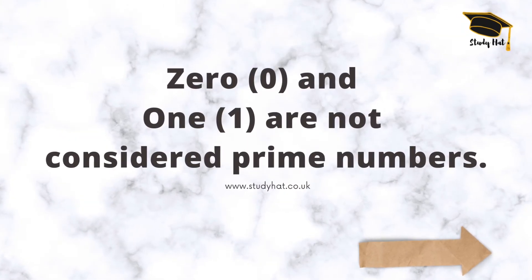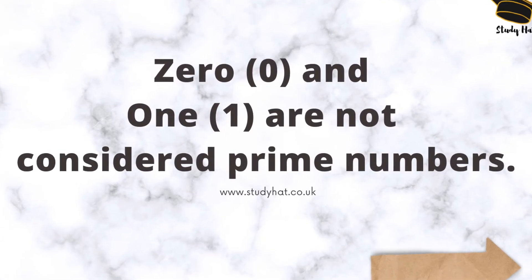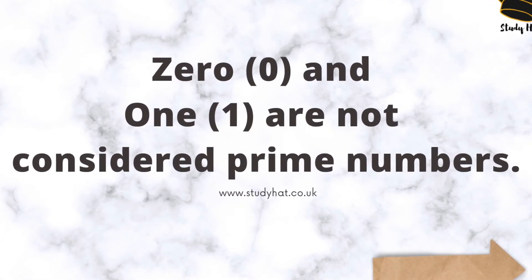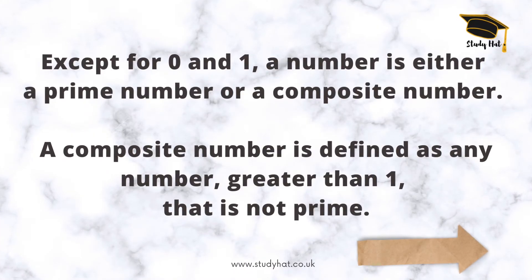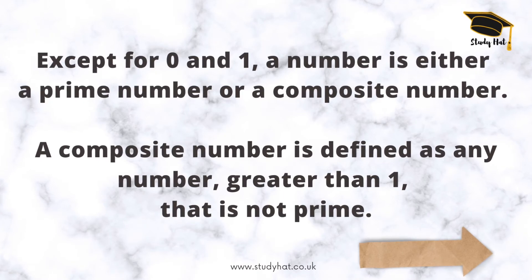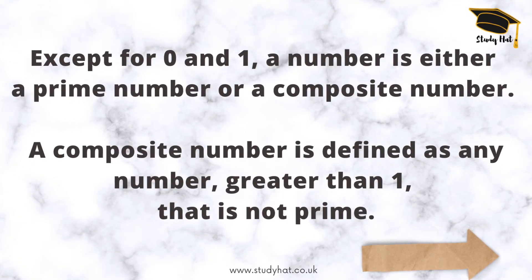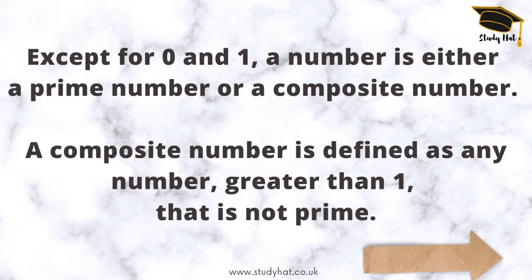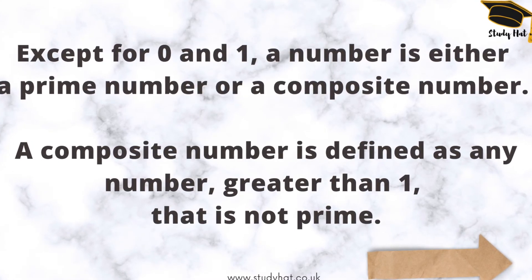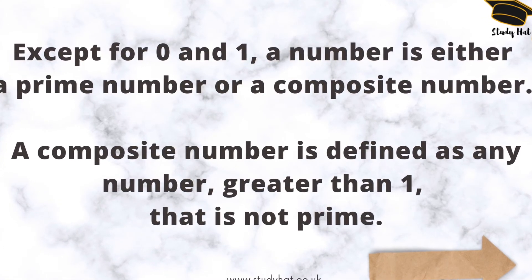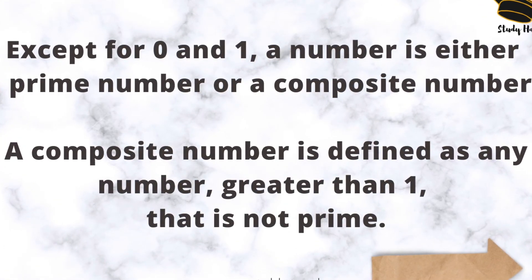0 and 1 aren't considered prime numbers. Except for 0 and 1, a number is either a prime number or a composite number. A composite number is defined as a number greater than 1 that is not prime.